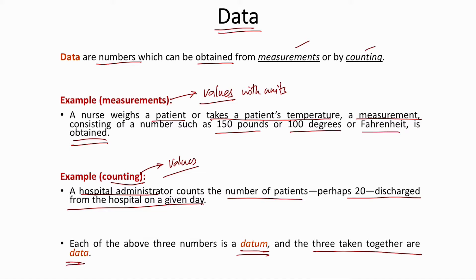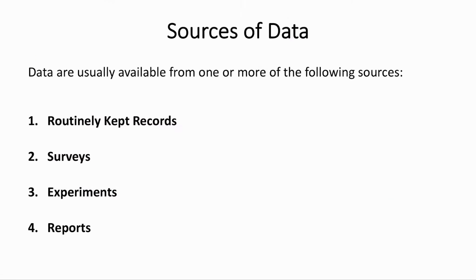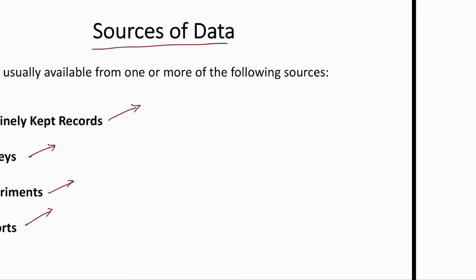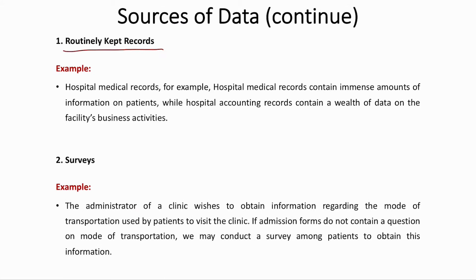There are four common sources of data: routinely kept records, surveys, experiments, and reports. Routinely kept records include hospital medical records or bank statements — records that contain an immense amount of information. Hospital medical records contain detailed patient information, and hospital accounting records contain data on the facility's business activities.